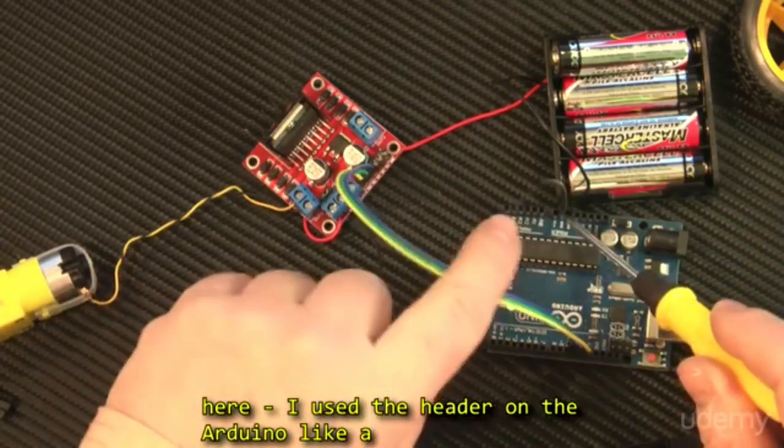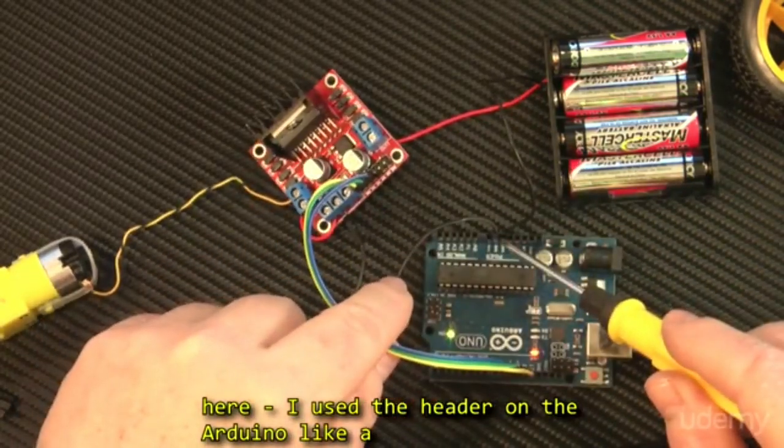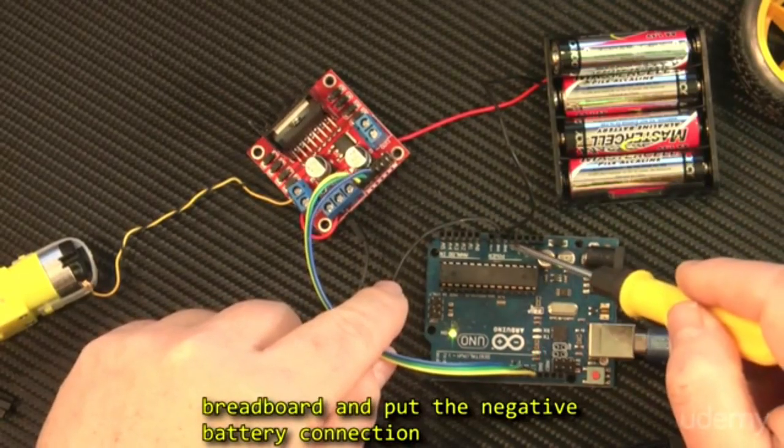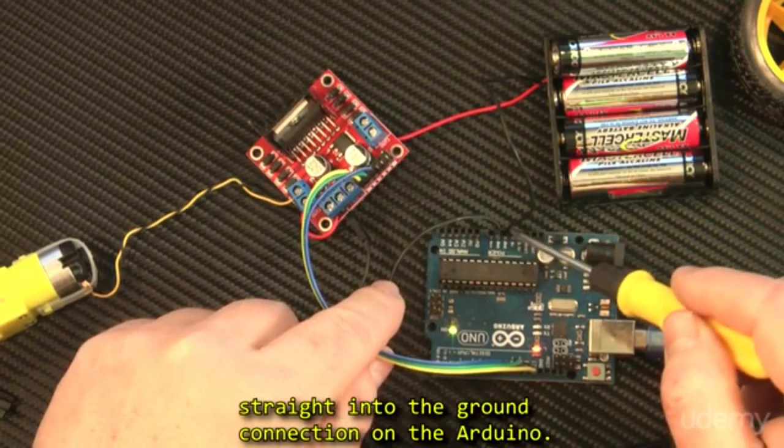Or you can see what I did here, I used the header on the Arduino like a breadboard, and I put the negative battery connection straight into one of the ground connections on the Arduino.